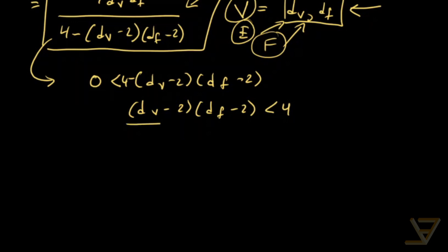And since this is an integer that means DV minus 2, DF minus 2 is less than or equal to 3. And DV is greater than or equal to 3 because each vertex has to have at least 3 edges coming out of it. And each face must have at least 3 edges on its boundary. So this is greater than or equal to 3 minus 2, 3 minus 2, and that's just equal to 1.